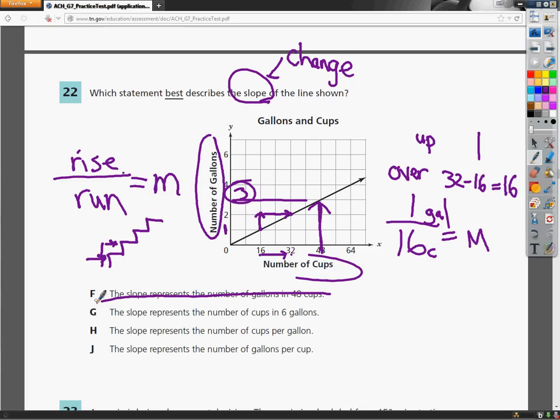G says the slope represents the number of cups in six gallons. Once again, I would have to extend this line up here and you get to 96 and you'll find out that it matches six. But a single point does not represent slope. Slope represents change. So it can't be fenced in by the whole number of six. So that can't be it.